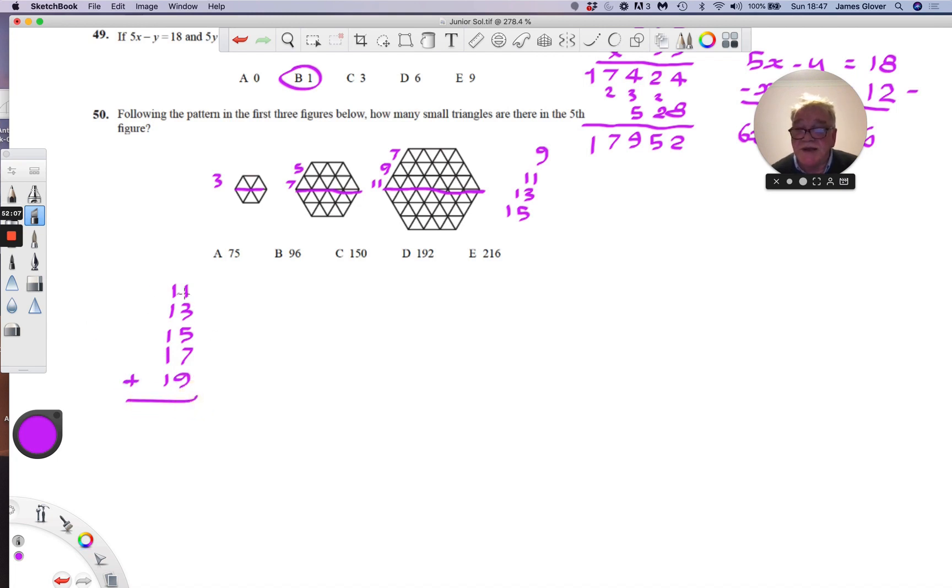And we can add these up. 11 and 19 is 30. 13 and 17 is another 30. That makes 60. And the 15, 75. And that's half the shape. So we just multiply this by 2 to get 150.